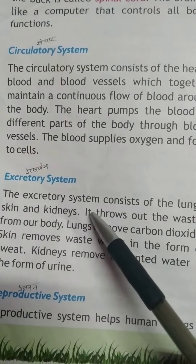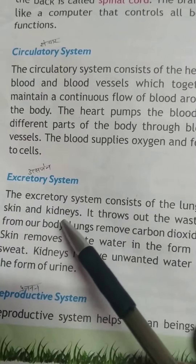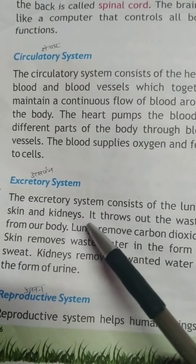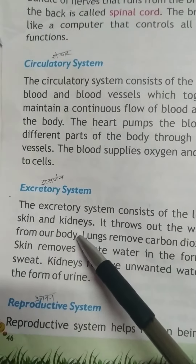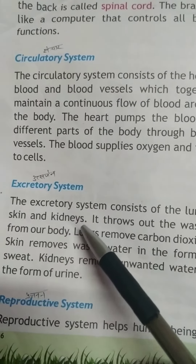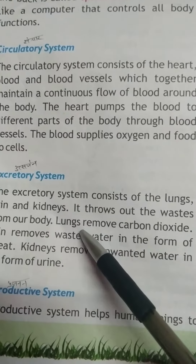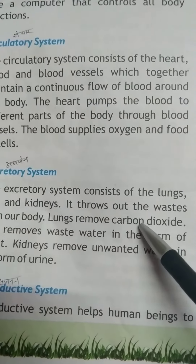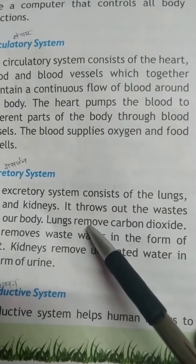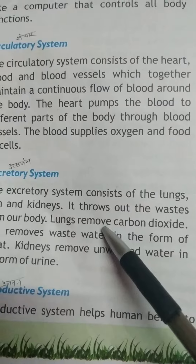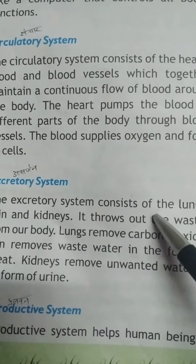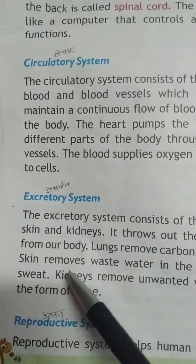یعنی کہ یہ lungs, skin اور kidneys ہوتے ہیں جو ہماری body میں جو waste ہوتا ہے اس کو باہر نکالتے ہیں. Lungs remove carbon dioxide. Lungs جو ہوتے ہیں وہ carbon dioxide remove کرتے ہیں — یعنی کہ ہٹاتے ہیں.